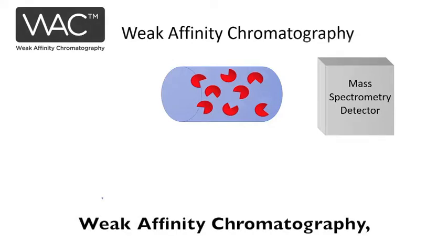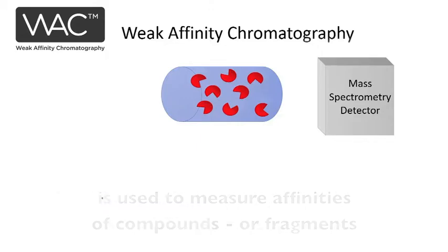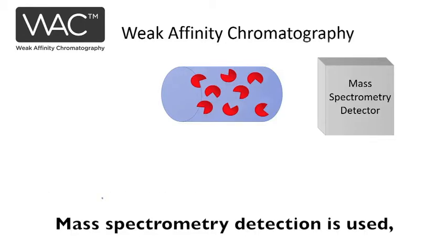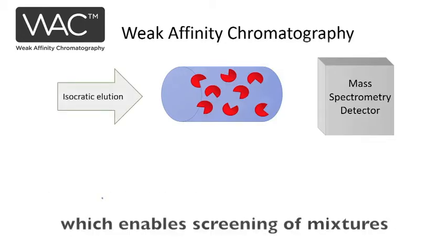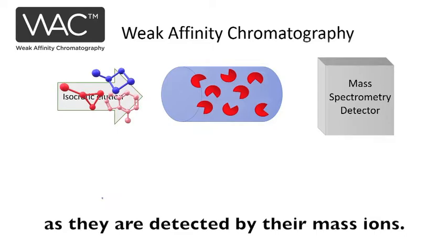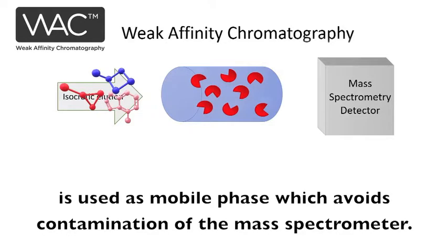Weak affinity chromatography is used to measure affinities of compounds or fragments that bind weakly or transiently to an immobilized target protein. Mass spectrometry detection is used, which enables screening of mixtures of several different compounds or fragments at the same time as they are detected by their mass ions. Ammonium acetate buffer with a near physiological pH is used as mobile phase, which avoids contamination of the mass spectrometer.